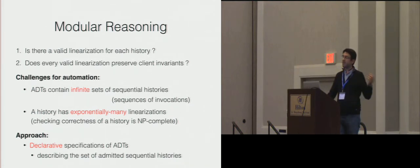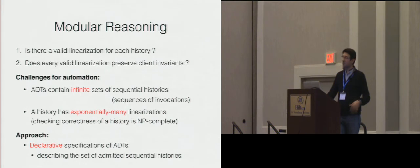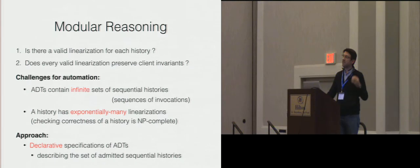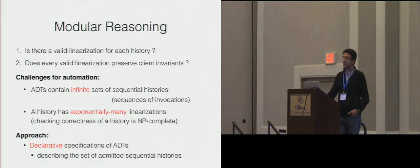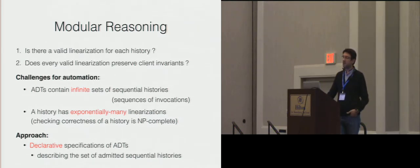Our way of dealing with these challenges is to use a class of declarative specifications of abstract data types, which are a direct description of the set of sequential histories they admit. These specifications are an alternative to the well-known state-based specifications, where each method of an abstract data type is annotated with pre- and post-conditions. More concretely, our specifications are first-order formulas that describe the sequences of invocations admitted by an abstract data type.